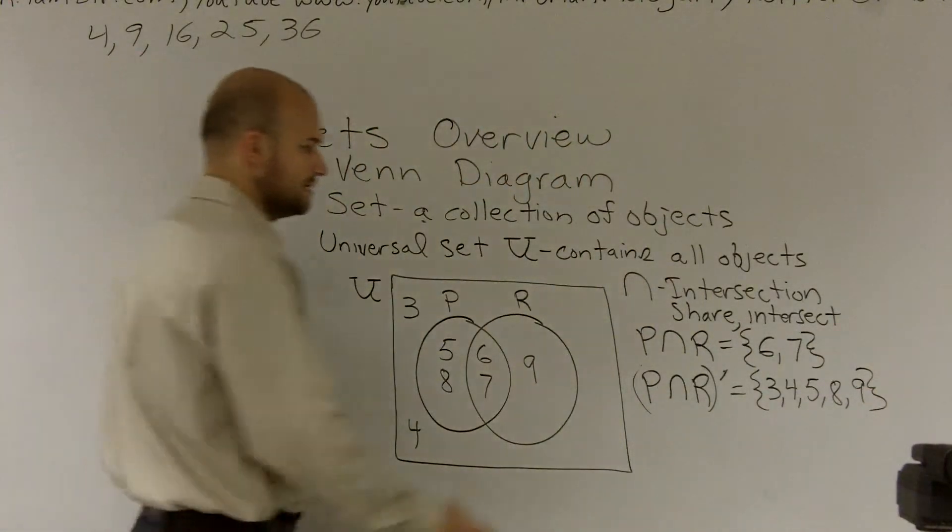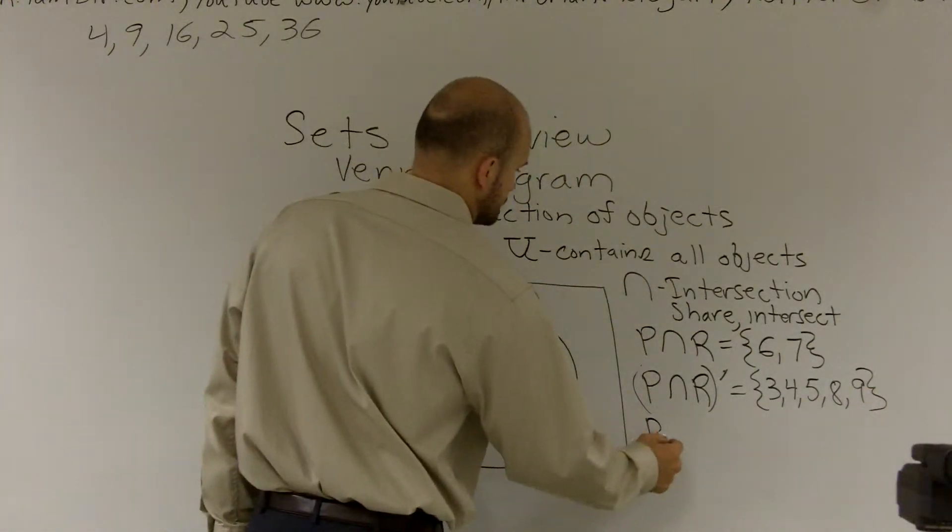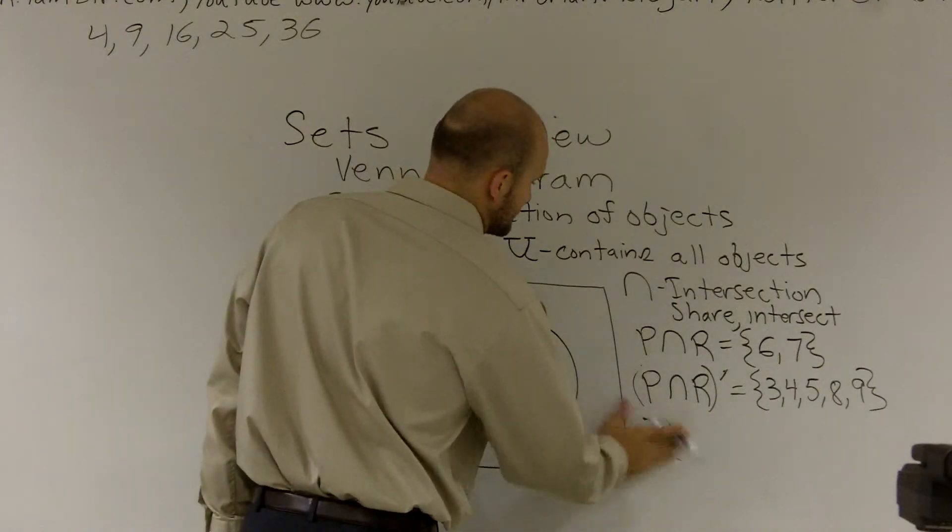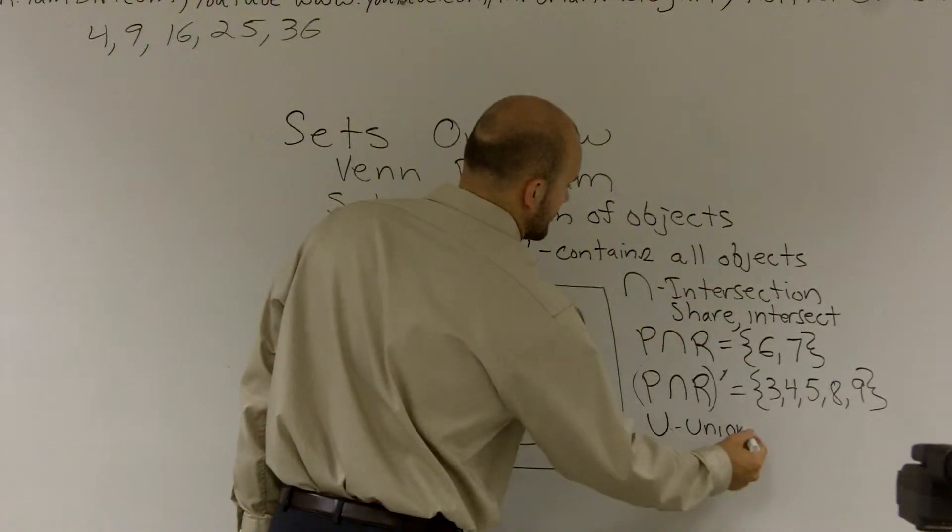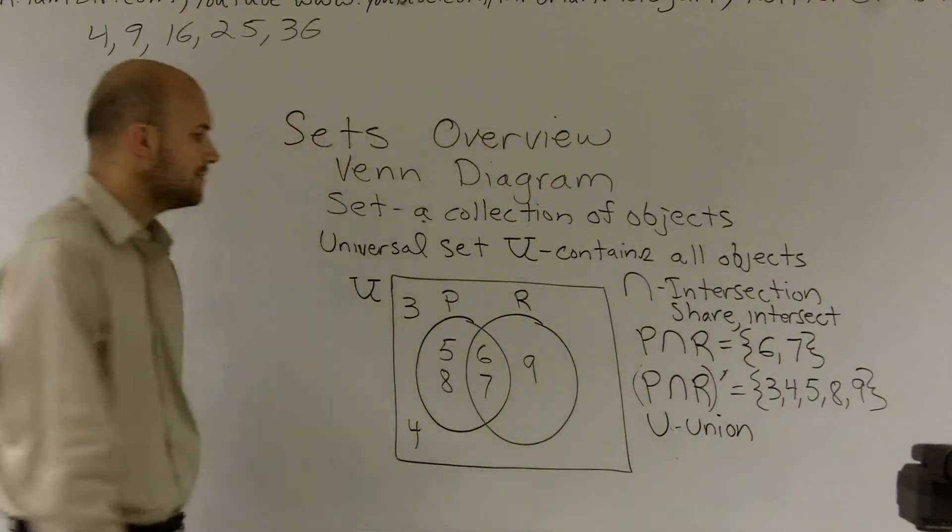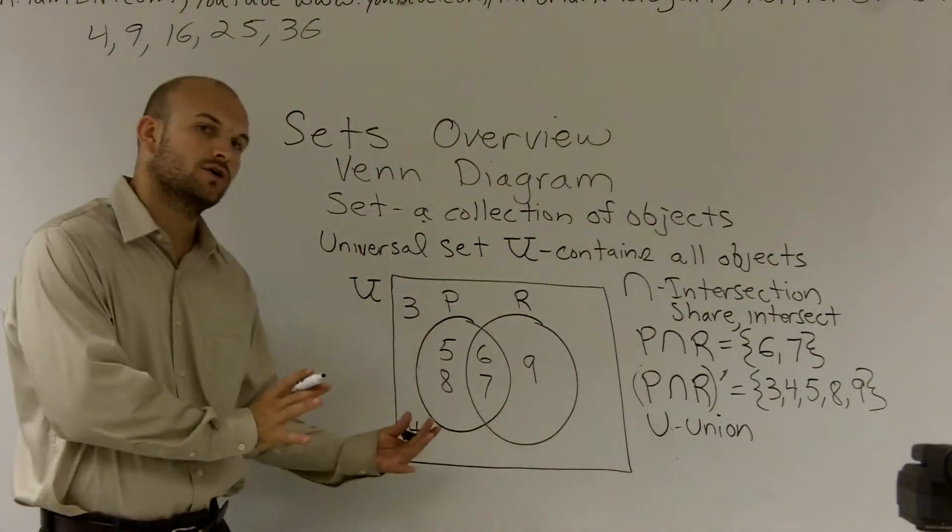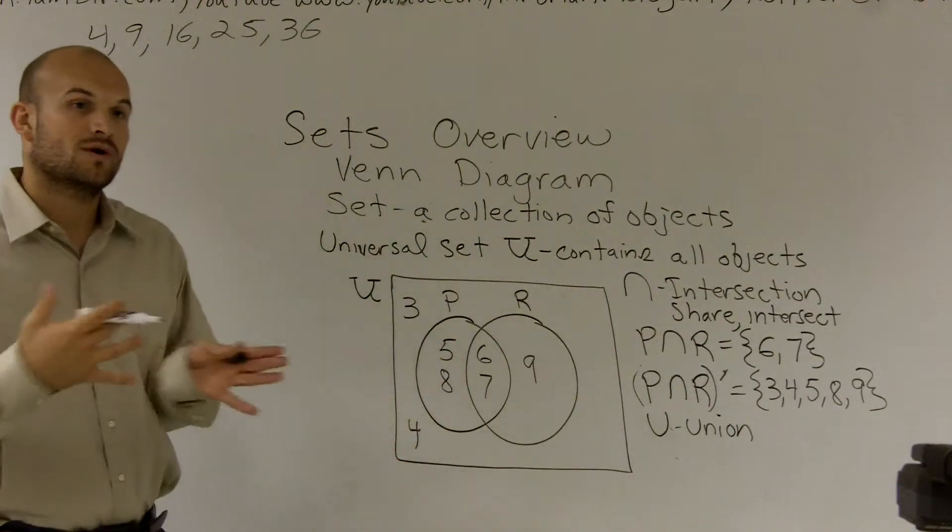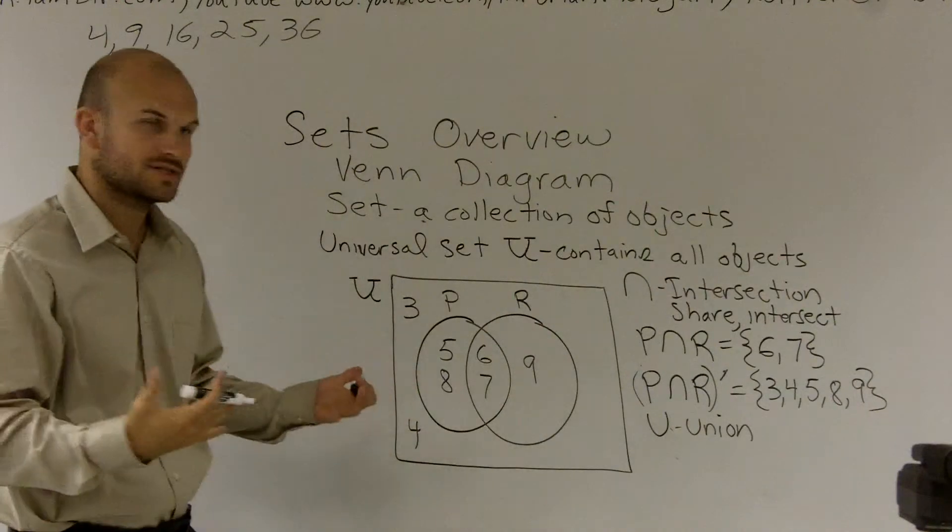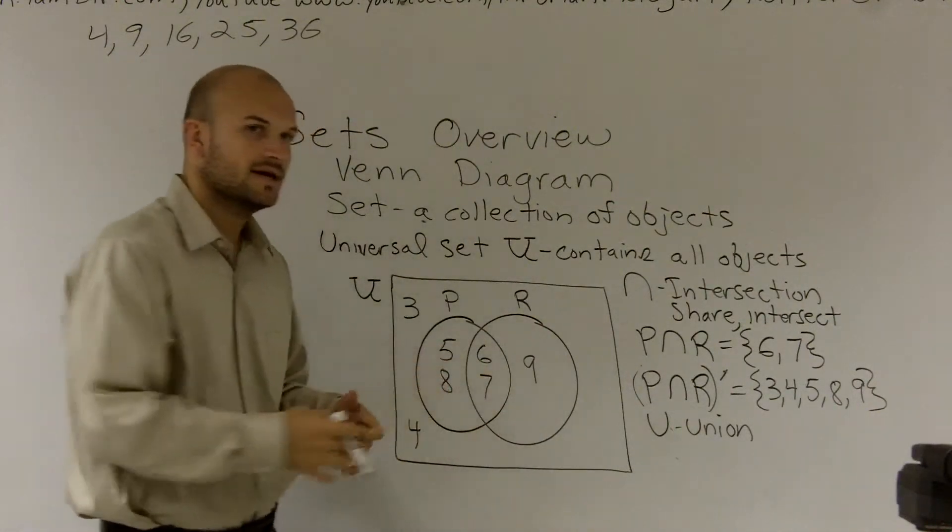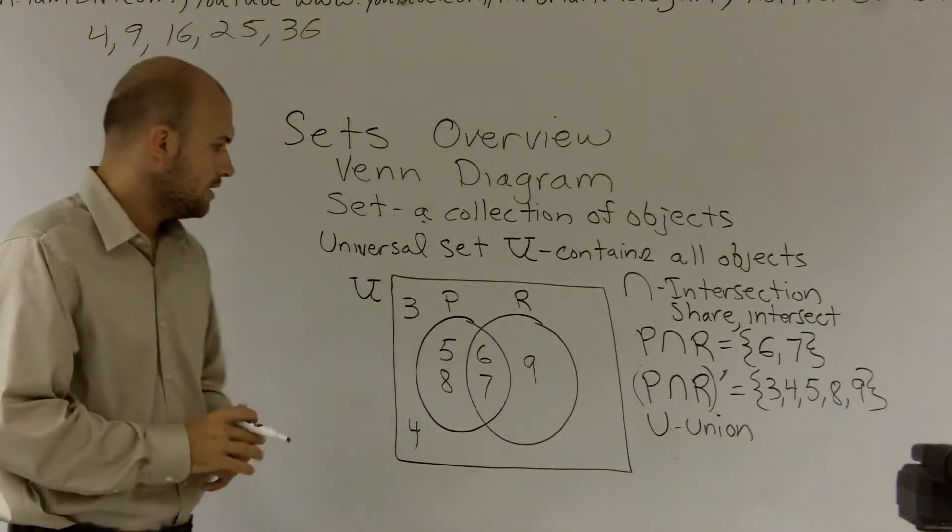Now let's go ahead and look at union. Union is representative of what's in one circle or what's in another circle. So the way I like to think of this, because a lot of students get this mixed up with intersect and they don't really understand the or.